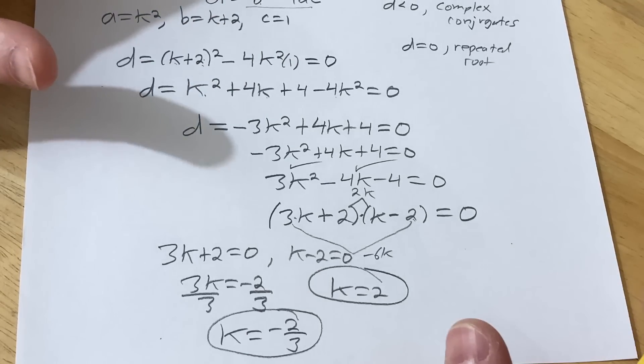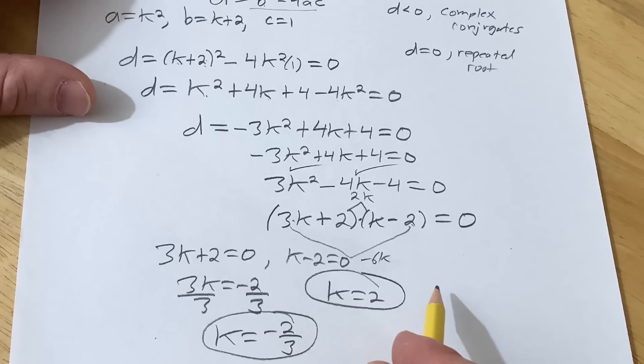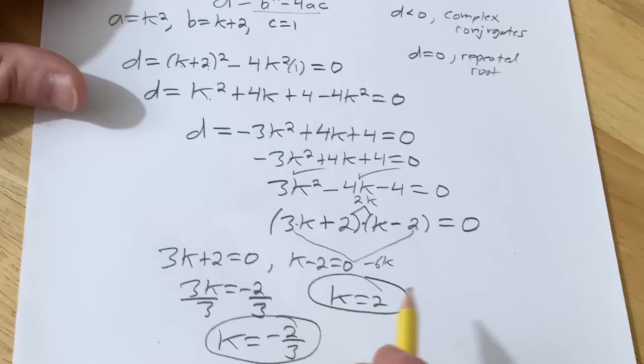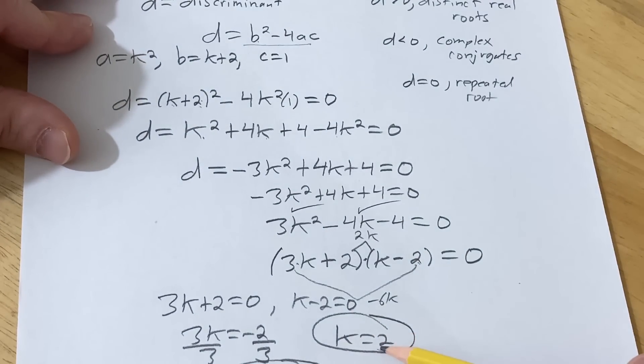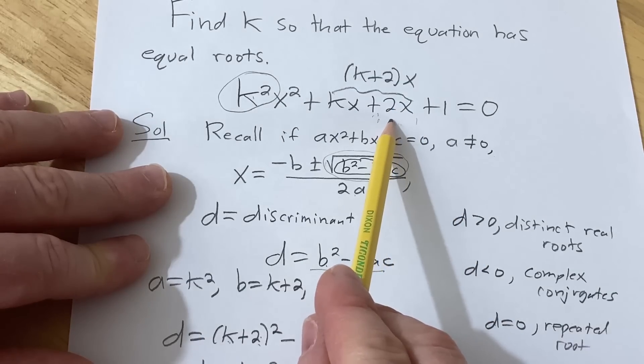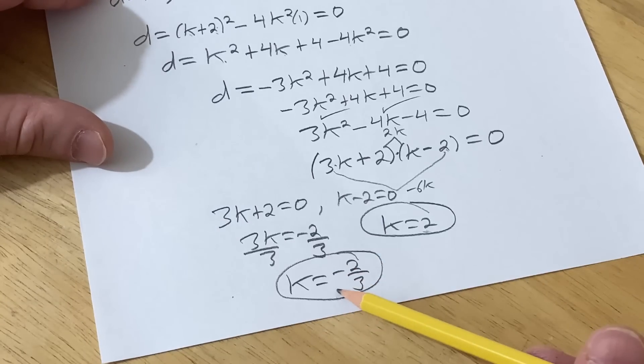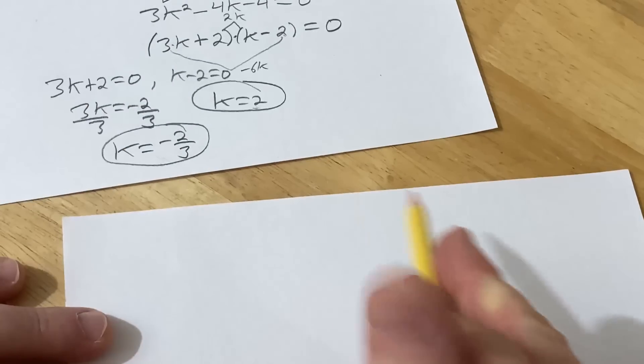So not really a difficult problem, but still kind of interesting to do. So those are the values of k such that this quadratic equation has equal roots. So if I were to plug in k equals 2 into this equation, I would get a quadratic equation with equal roots. Same thing with negative 2 thirds. You know what? We should try it. Let's just try it because I don't really want to deal with the fraction. So let's just try that one.